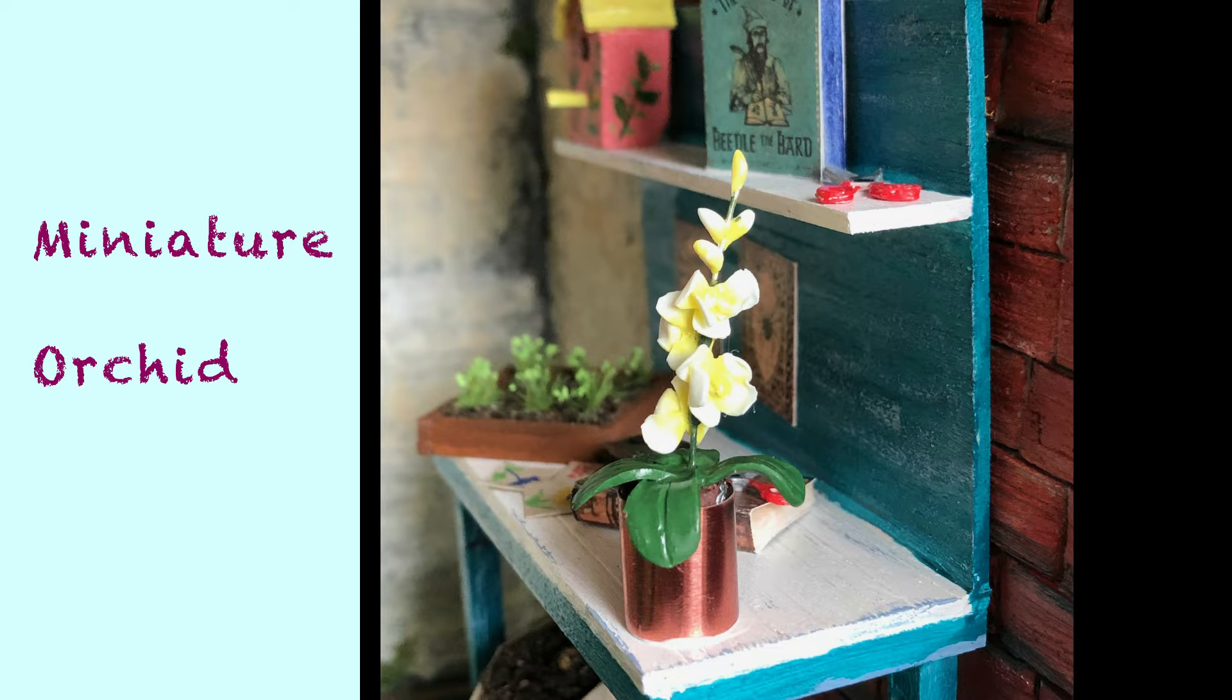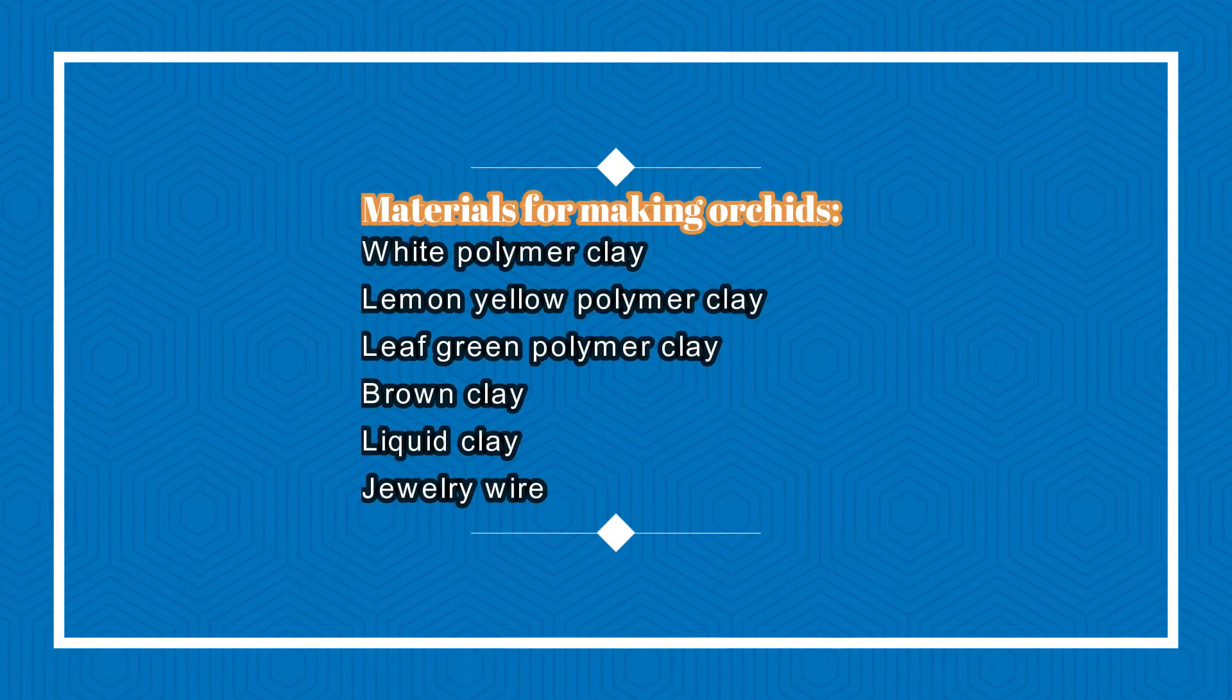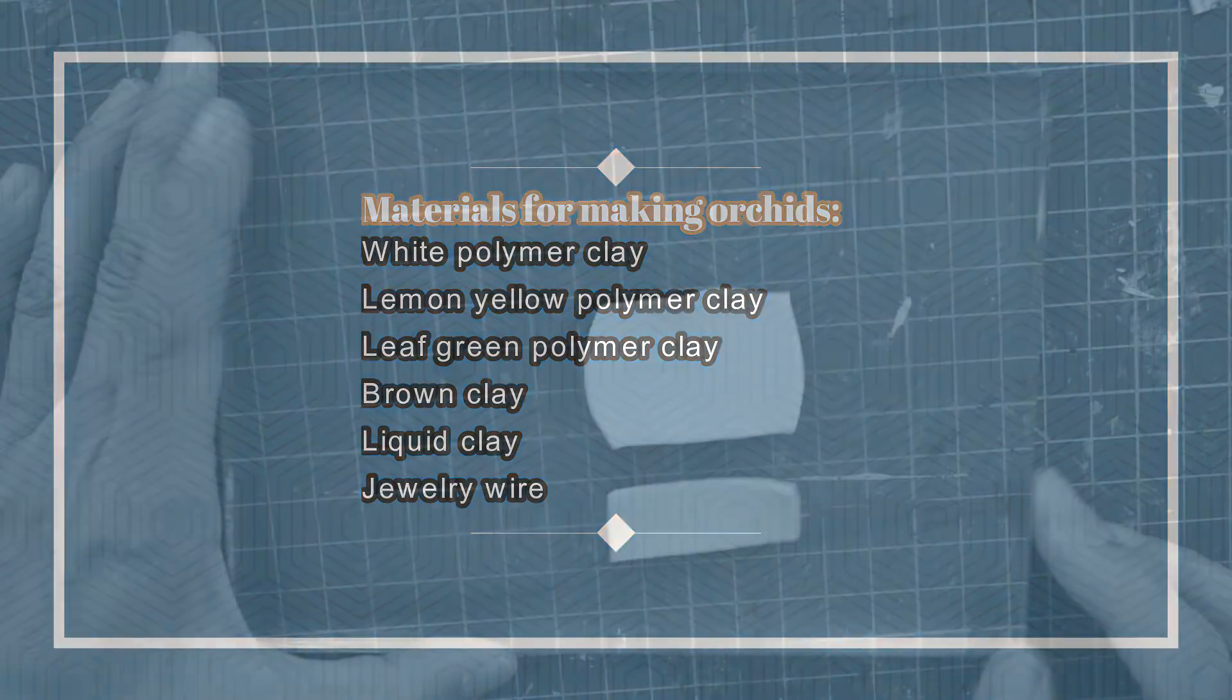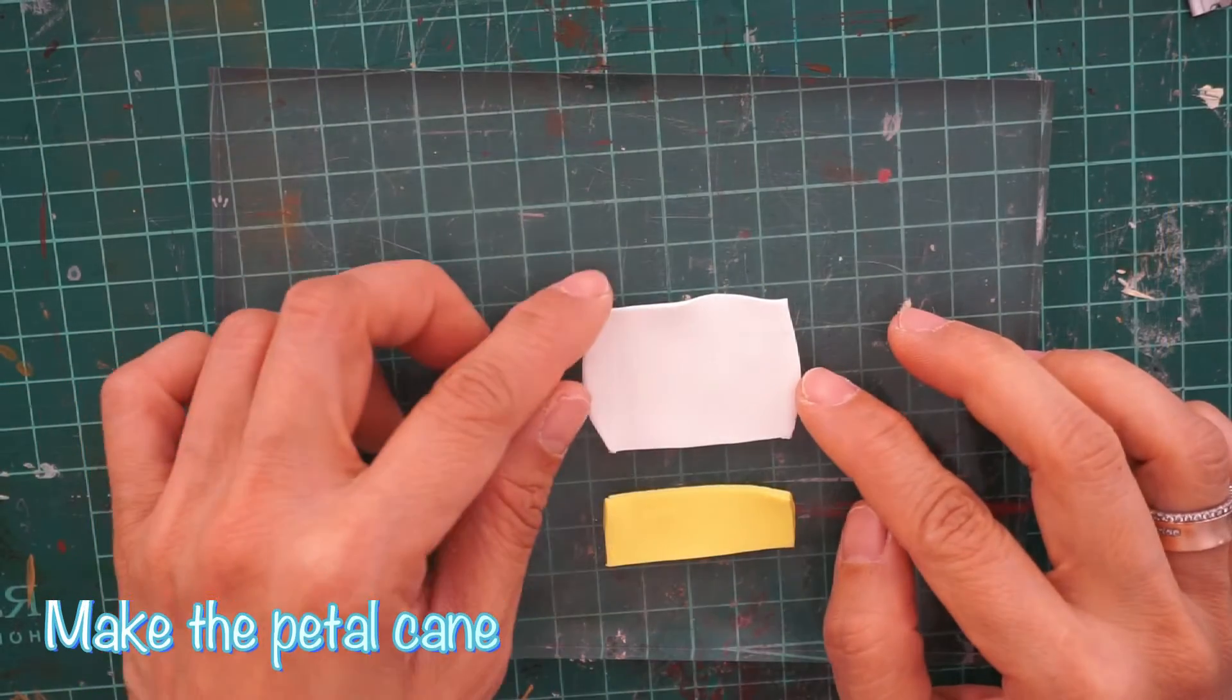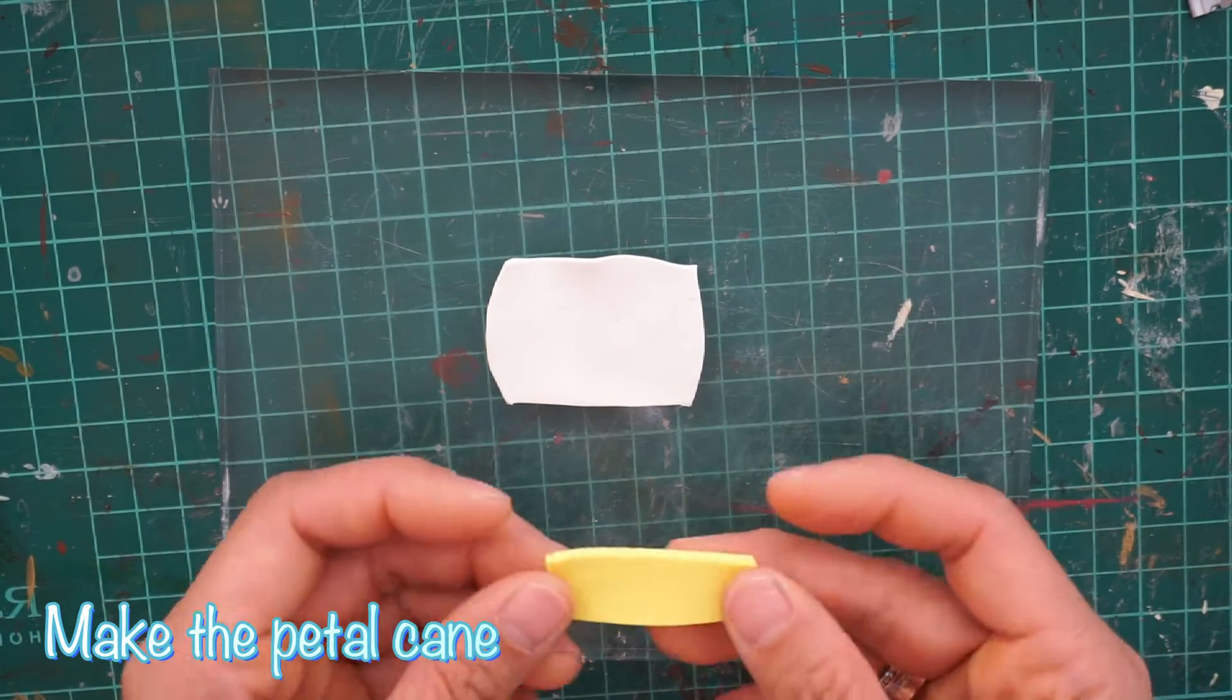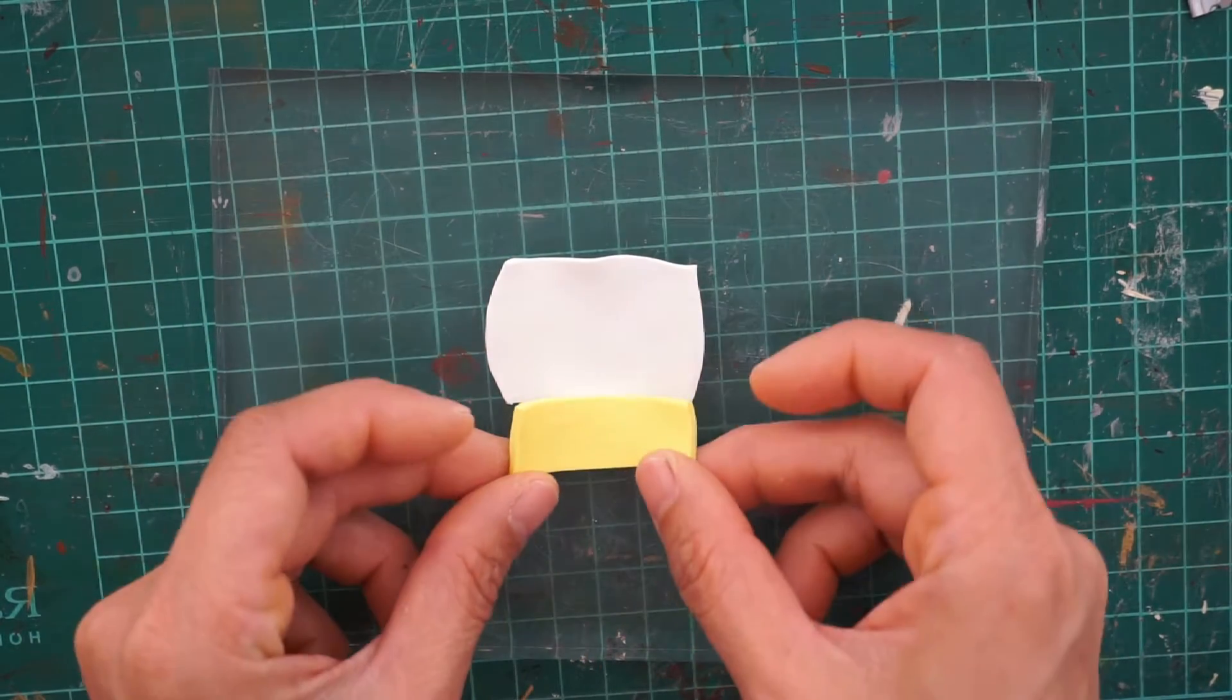Hello, today I'm going to show you how to make this cute miniature orchid. Here are the materials that you need. Let's start by making the flowers. I already have conditioned polymer clay and we want to make a gradient color of these two clays.